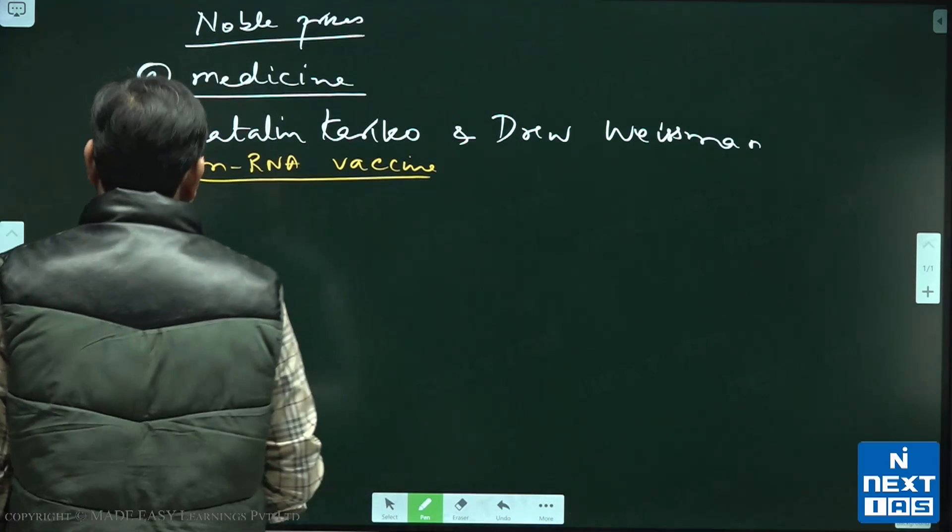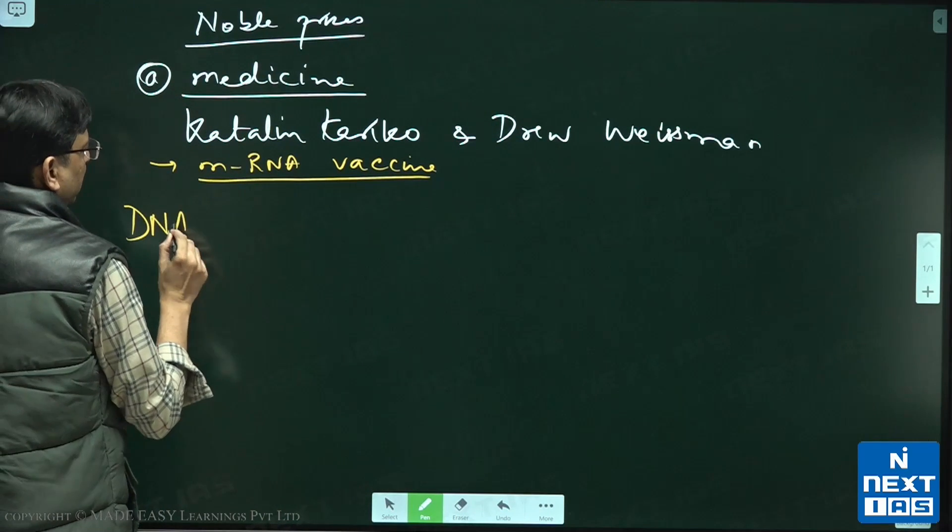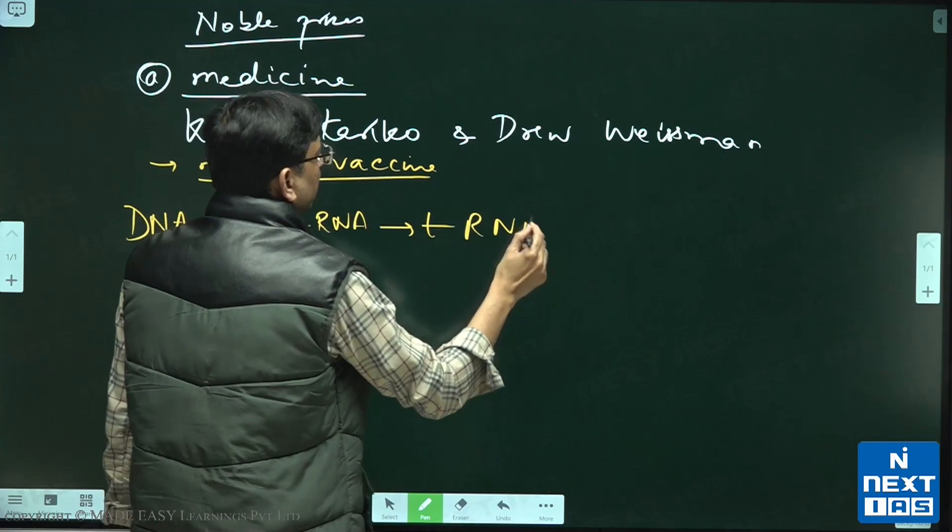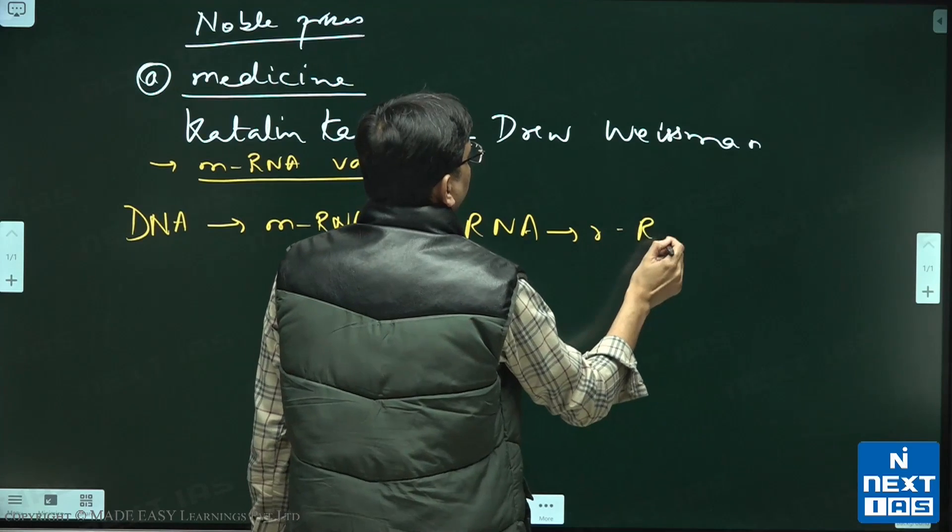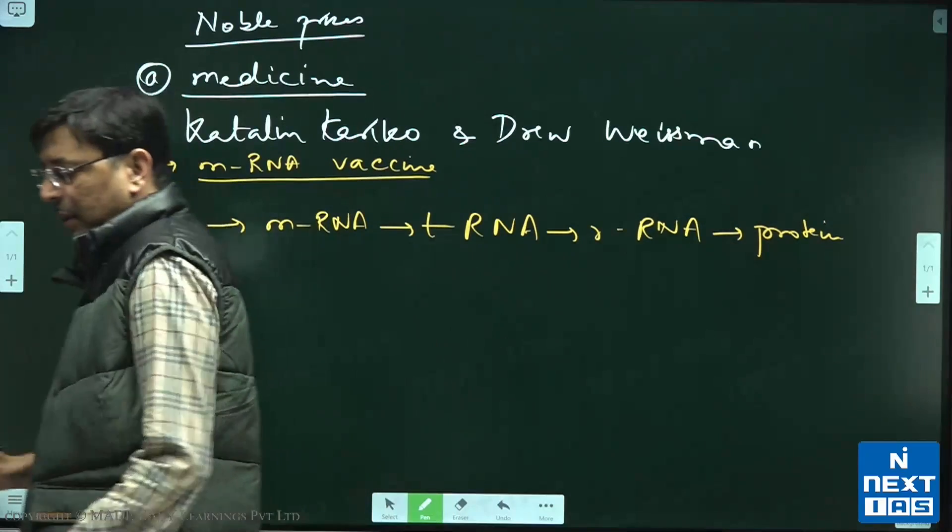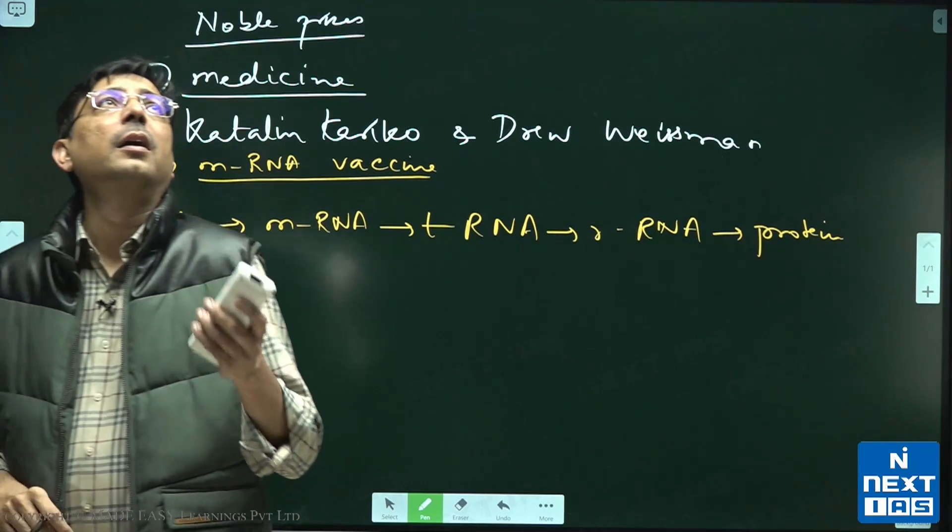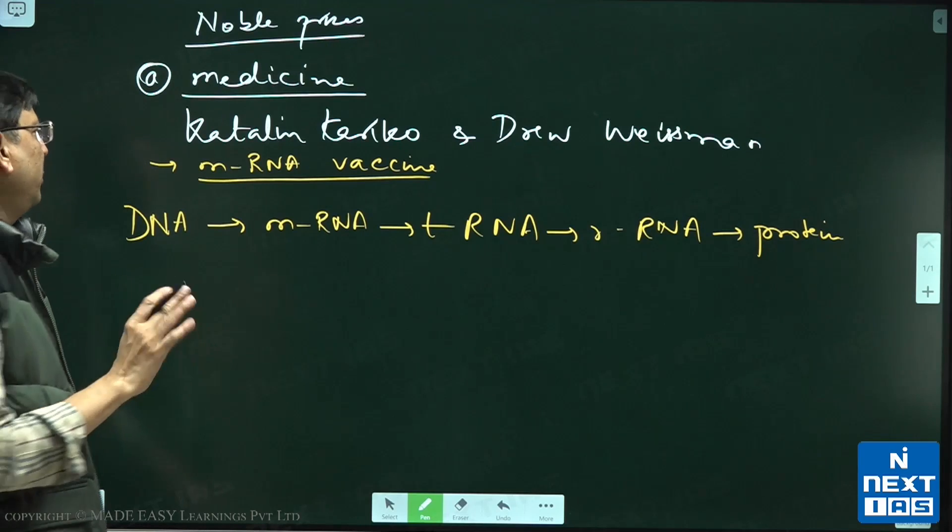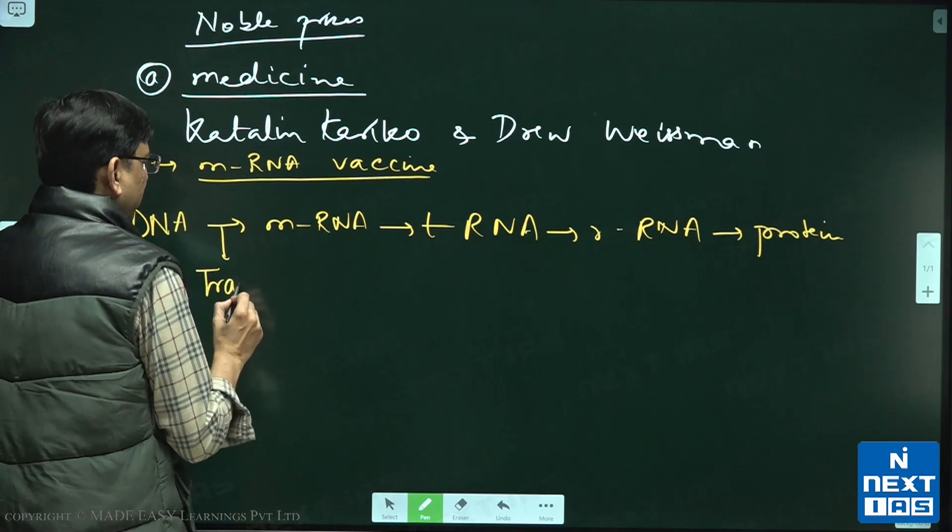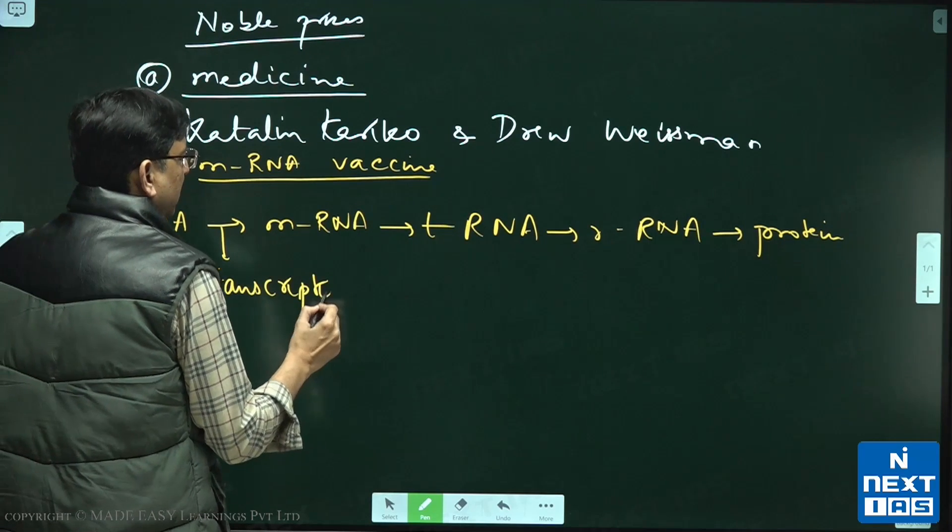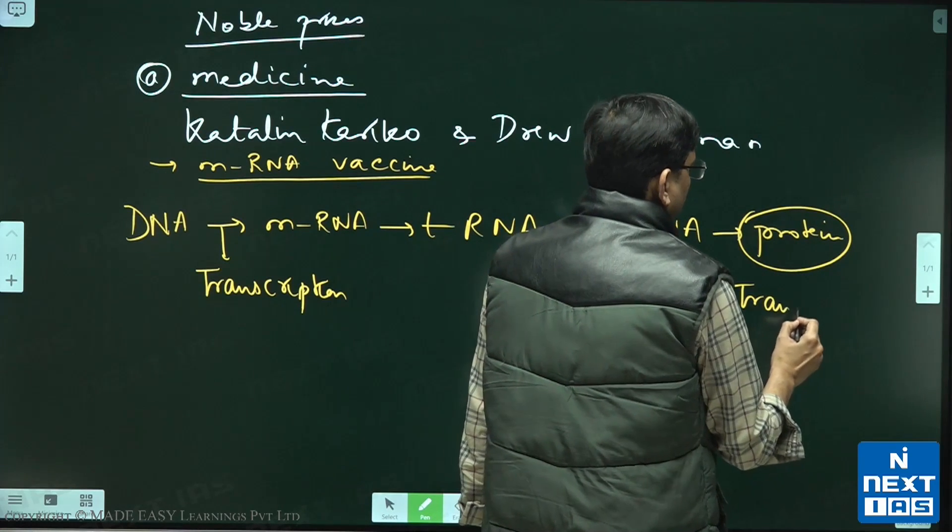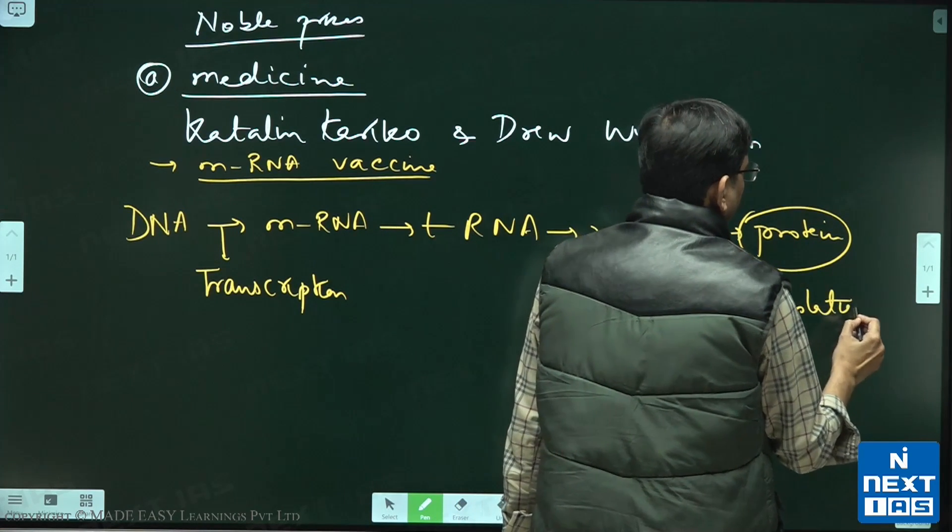This is how it goes: DNA to messenger RNA, then to transfer RNA, then to ribosomal RNA, and then we have the protein. That is how it works. Messenger RNA - obviously this process we call as transcription, and the synthesis of the protein is known as translation.